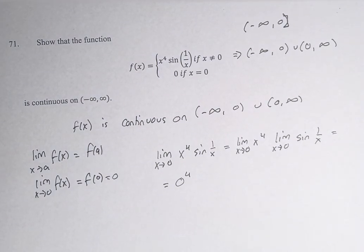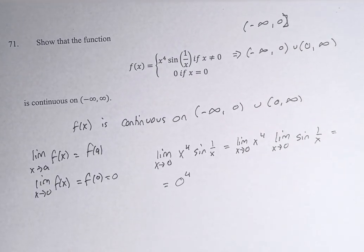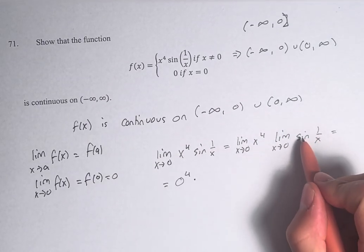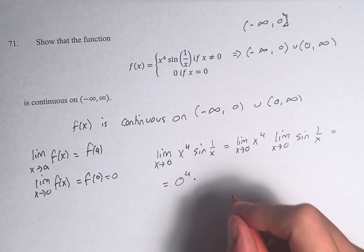And what I'm going to do here is something that is technically not mathematically sound, but I'm going to do it to prove a point. We're going to plug in 0 here. Now we can't do that because we would be dividing by 0, but we're not actually going to calculate anything. We're just going to have 0 to the fourth times sine of 1 over 0.